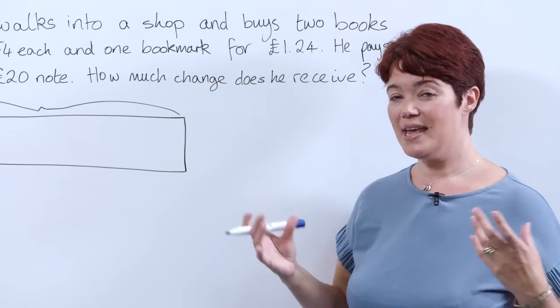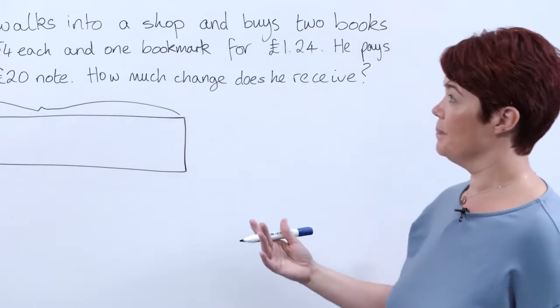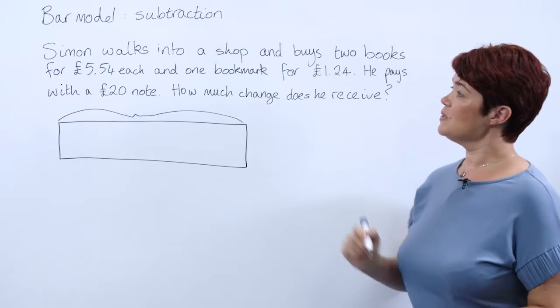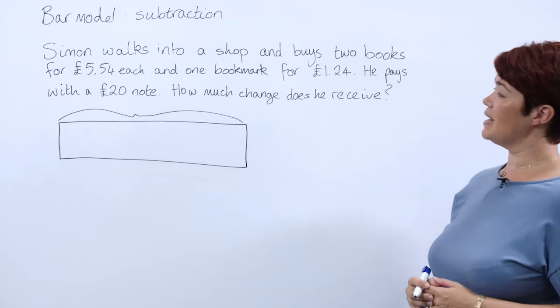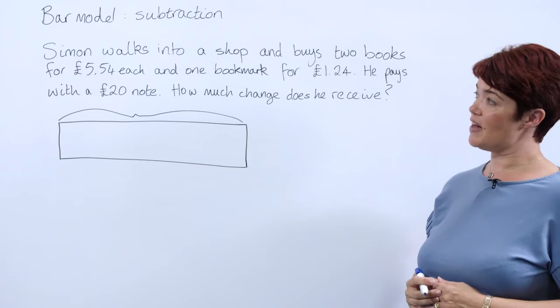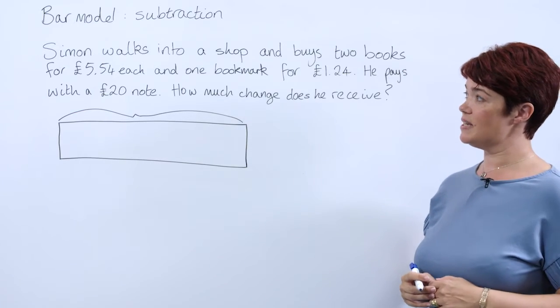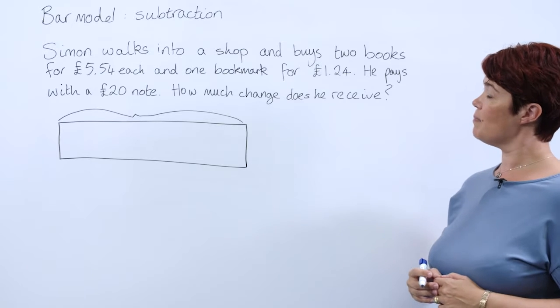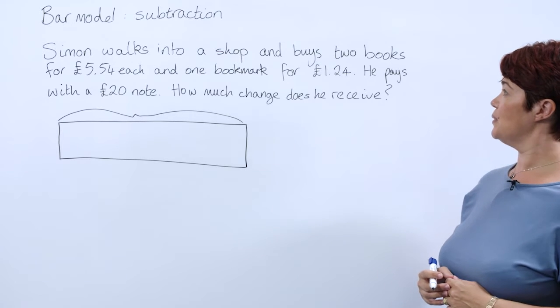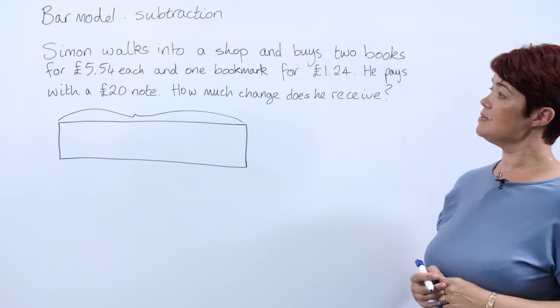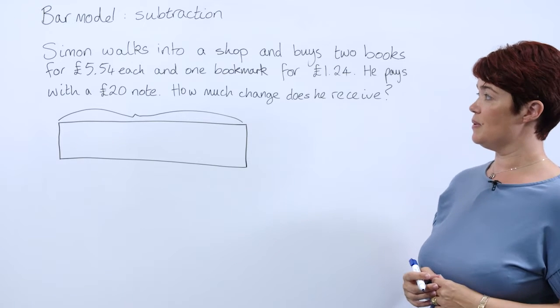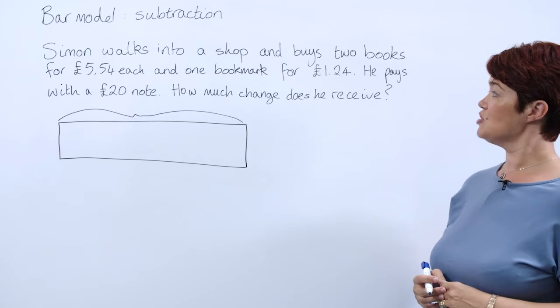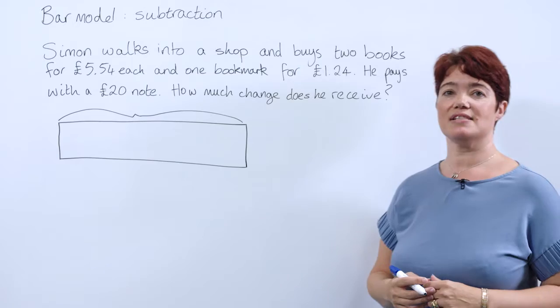So here's our problem. Simon walks into a shop and buys two books for £5.54 each and one bookmark for £1.24. He pays with a £20 note. How much change does he receive?